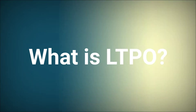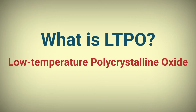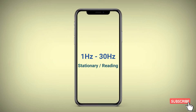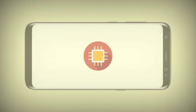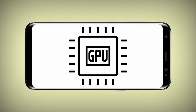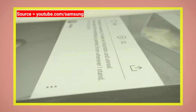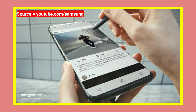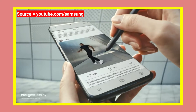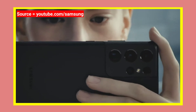So, what is LTPO? LTPO stands for Low Temperature Polycrystalline Oxide. It allows a display to dynamically change its refresh rate without needing any additional hardware support from the device's GPU and display controller. That means the device is able to change the display refresh rate automatically, from power-hungry high refresh rates to lower refresh rates when they aren't needed, which can save battery life.